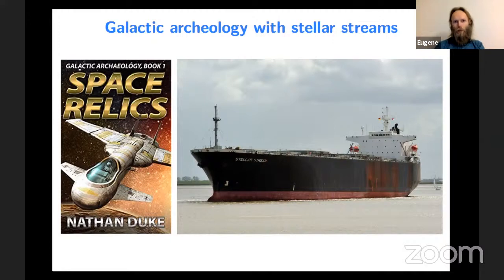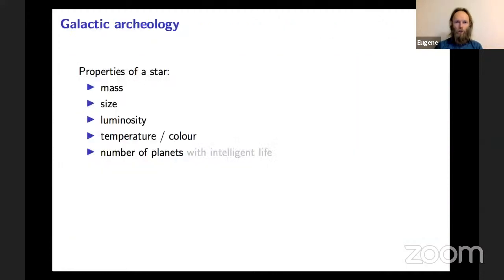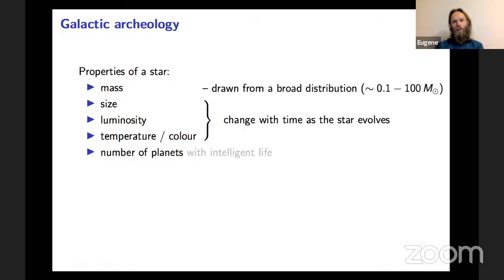I'll be mostly talking about the Milky Way today. When we look at the sky we see many stars, but as scientists we not only admire them — we measure their properties. You can learn about each star's mass, size, luminosity, or color. However, these quantities are not permanent: size, luminosity, and temperature change as the star evolves. Mass is more fixed, but stars have a variety of masses — many relatively light, a few heavier.